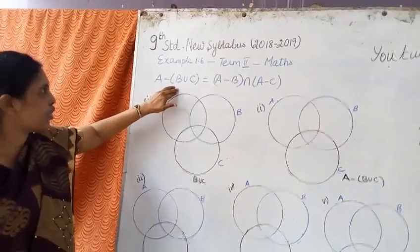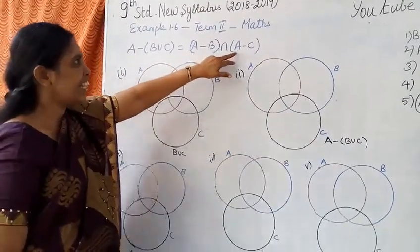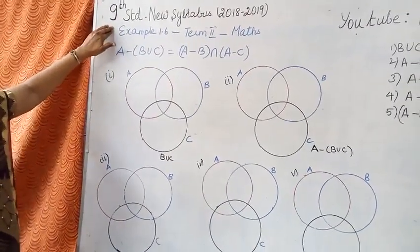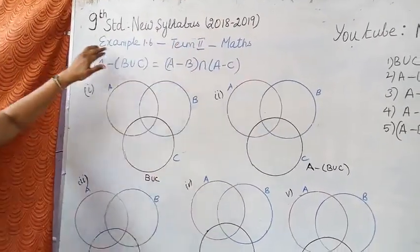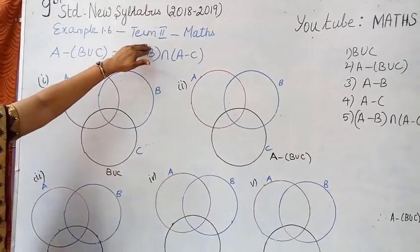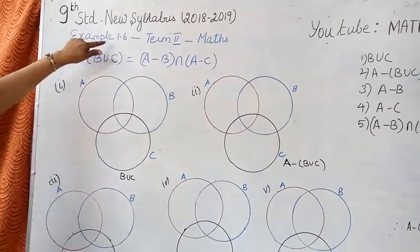A difference B union C equal to A difference B intersection A difference C. This is 9th standard new syllabus 2018-2019 example 1.6 term 2. Those who are studying 9th standard, now I am going to look at example 1.6.